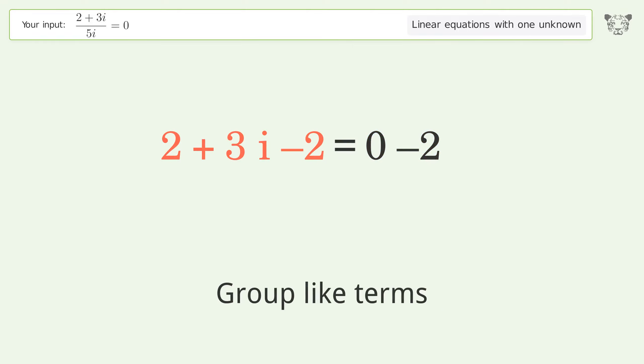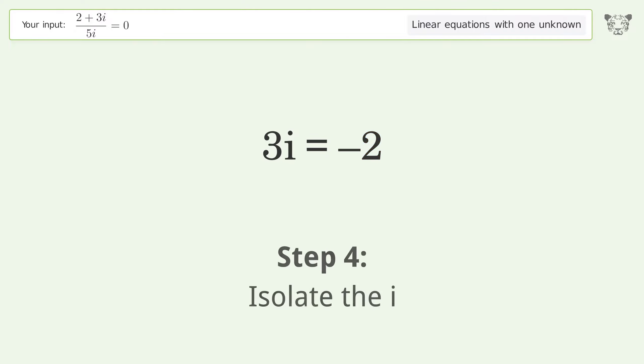Group like terms. Simplify the arithmetic. Isolate the i. Divide both sides by 3. Simplify the fraction.